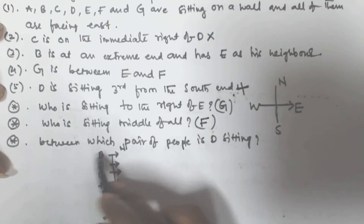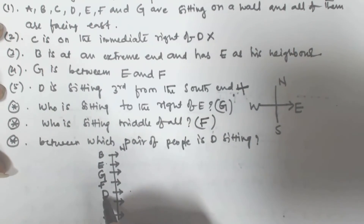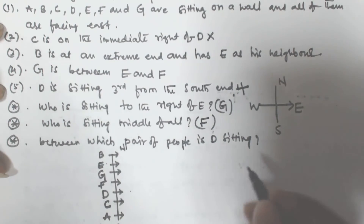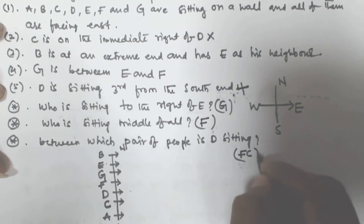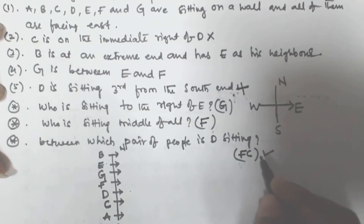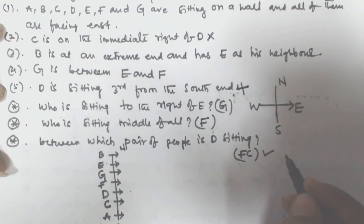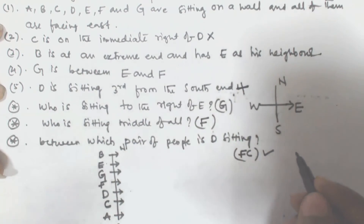Between which pair of people is D sitting? D is sitting between F and C. So for all three questions we have given the answers. I hope you got this. If you have any doubt, please leave a comment. Thank you very much for watching this video, and please subscribe to my channel.